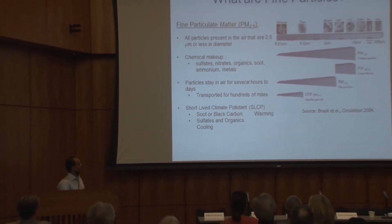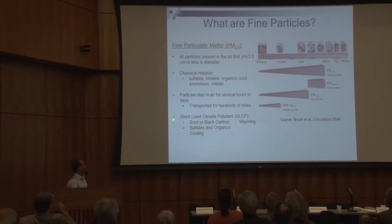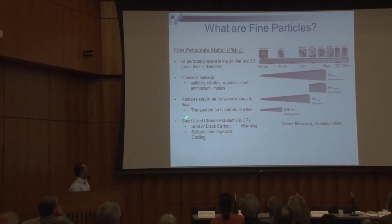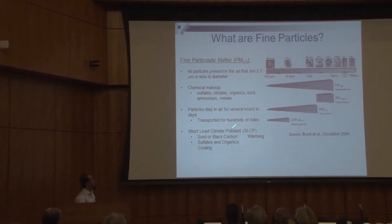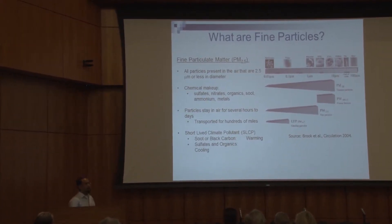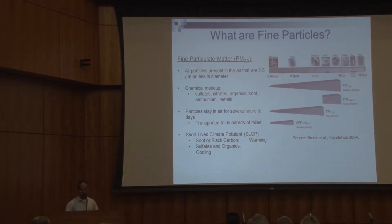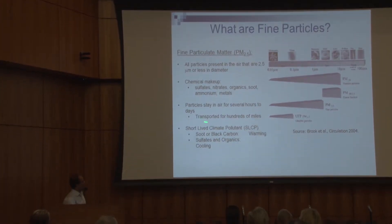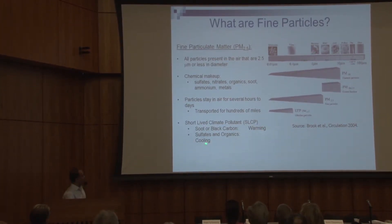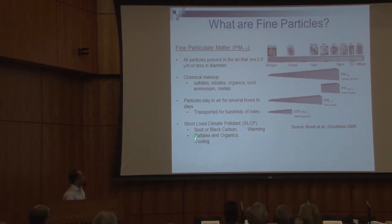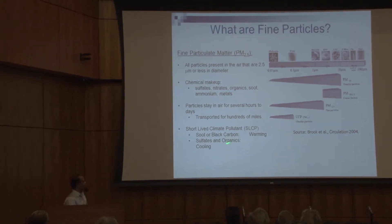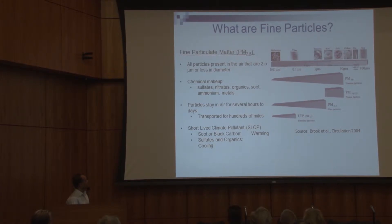As many of you mentioned earlier, fine particles are short-lived climate pollutants, and they can either cause warming or cooling. The soot or black carbon causes warming, while sulfates and organics, which are part of fine particles, may cause cooling.